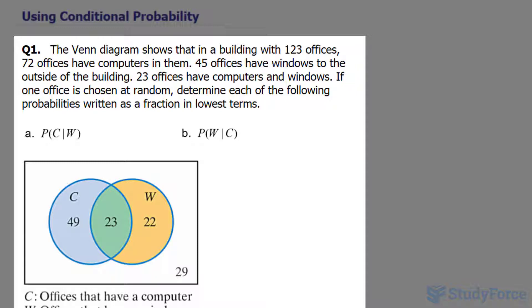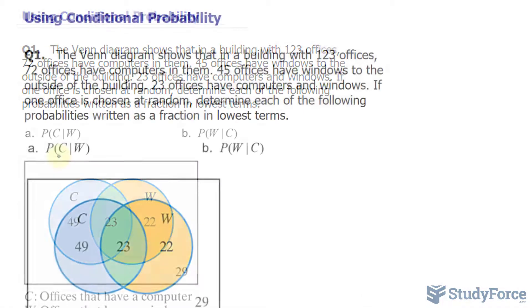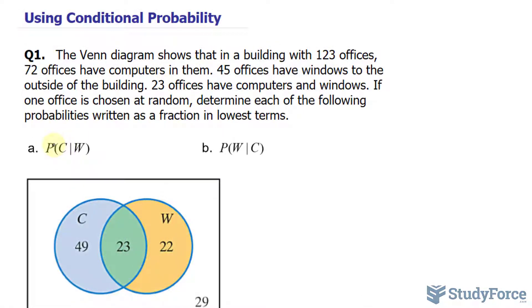If one office is chosen at random, determine each of the following probabilities written as a fraction in lowest terms. The first one being the probability of selecting an office that has a computer given that you selected one that has a window.